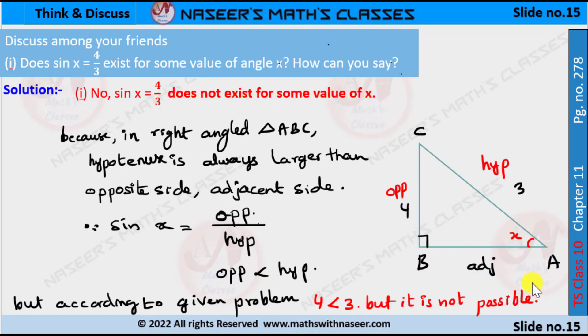Because in right angle triangle ABC, hypotenuse is always larger than the opposite side and adjacent side. sin x is defined as the ratio between opposite side and hypotenuse. We already know that opposite side is less than hypotenuse, but according to the given problem, 4 is less than 3, but it is not possible. If we divide 4 with 3, we get a value more than 1, so it is not possible.